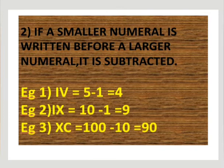IX, 10 minus 1, 9. X is 10, I is 1. So that means 10 minus 1, 9. XC, C means 100, 100 minus 10, 90. A smaller numeral is written before that minus. After means plus. Note it.